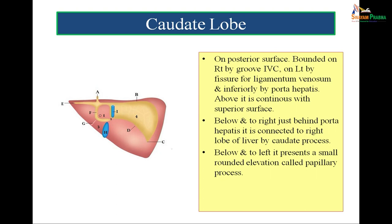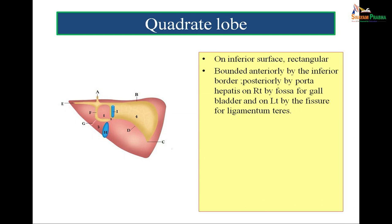Below and to the left, the caudate lobe presents a small rounded elevation called the papillary process. The quadrate lobe lies on the inferior surface of the liver and is rectangular in shape. It is bounded anteriorly by the inferior border, posteriorly by porta hepatis, on the right by the fossa for gallbladder and on the left by the fissure for ligamentum teres. G represents the fissure for ligamentum teres and 3 is the quadrate lobe in the figure, to the right of which is lying the fossa for gallbladder.